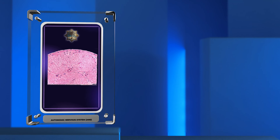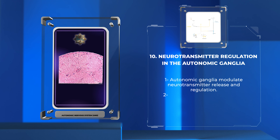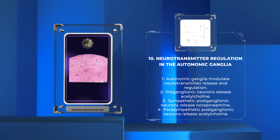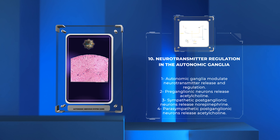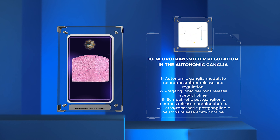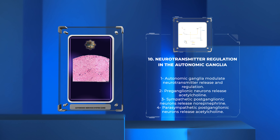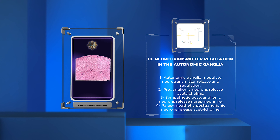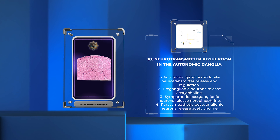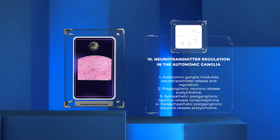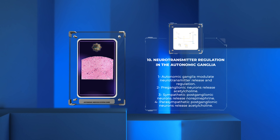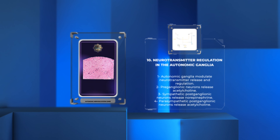The autonomic ganglia play a crucial role in modulating neurotransmitter release and regulation. Within these ganglia, acetylcholine acts as the primary neurotransmitter released by preganglionic neurons, activating postganglionic neurons. In the sympathetic division, norepinephrine is the main neurotransmitter released by postganglionic neurons. Conversely, in the parasympathetic division, postganglionic neurons release acetylcholine onto target cells.